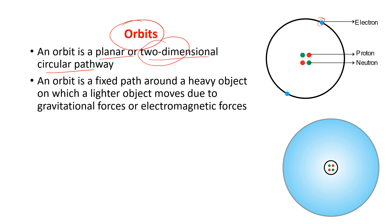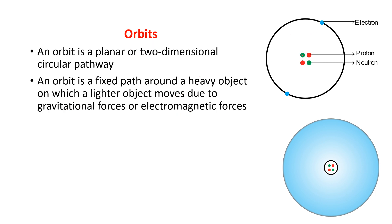An orbit is a fixed path around the heaviest object on which lighter objects move. Here we compare lighter objects with electrons — electrons revolve around the heavier object, which is the nucleus. The nucleus contains two subatomic particles: protons and neutrons. The weight of the electron is very negligible compared to the proton and neutron. Electrons move due to gravitational force and electromagnetic force — these two factors make the electrons revolve around the nucleus.